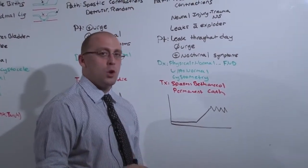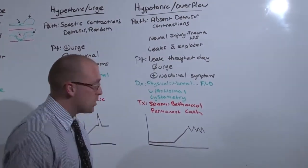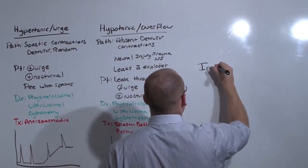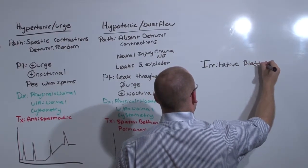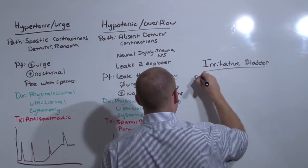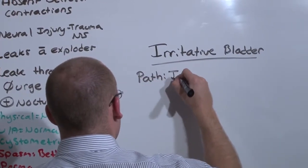We're going to close with two other kinds of incontinence that are found in anybody. The first is irritative bladder. This really isn't an incontinence. It's just the patient really has to go, and sometimes they can't make it. The pathogenesis is just that. It's irritation from inflammation.